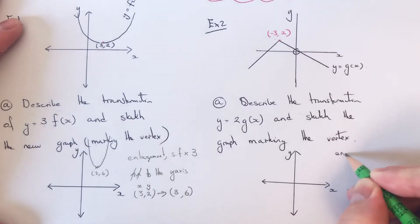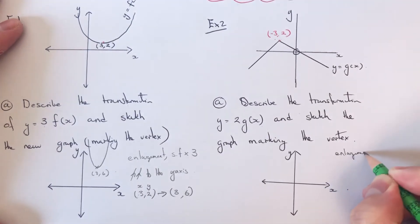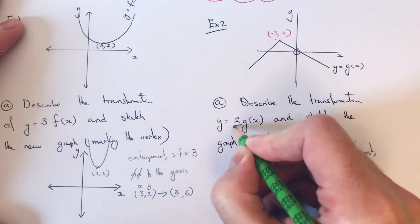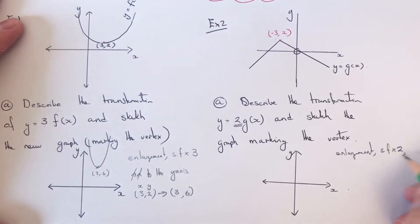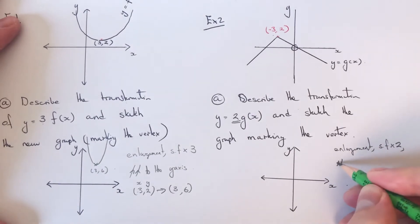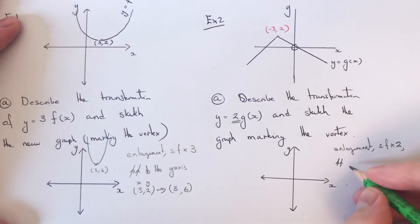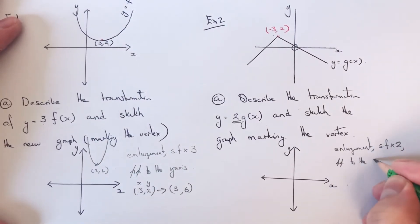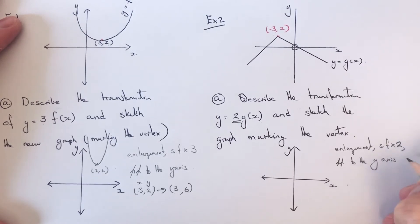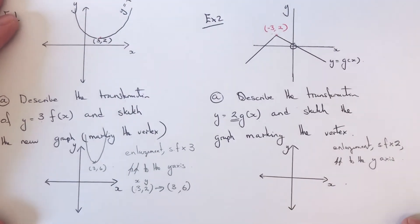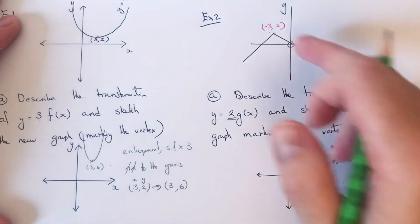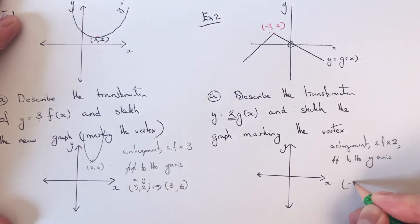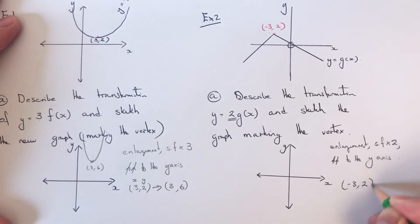Our scale factor is here, and just make sure you put parallel to the y-axis. This time we need to multiply the y coordinates by 2 on our graph. So our vertex is at minus 3 comma 2.